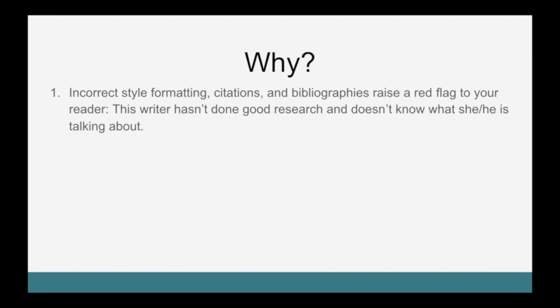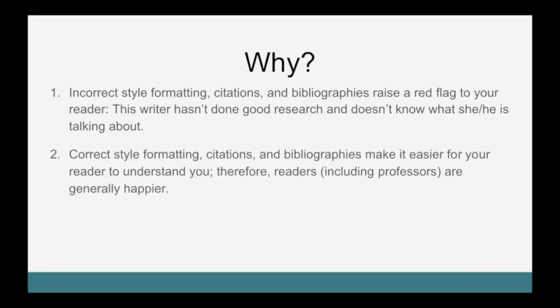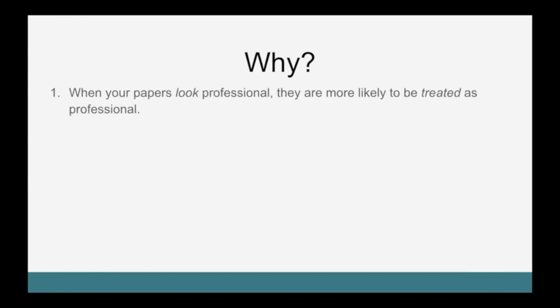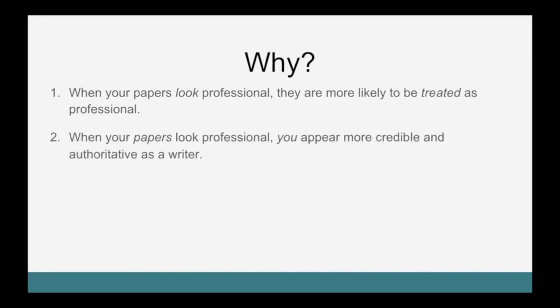So why does any of this matter? Because incorrect style formatting, citations, and bibliographies raise a red flag to your reader: this writer maybe has not done good research and does not know what she or he is talking about. On the other hand, correct style formatting, citations, and bibliographies make it easier for your reader to understand you. Therefore, readers, including professors, are generally happier reading your work. Additionally, learning the Chicago Manual style now means you do not have to learn it while writing, so you save time. It is much easier to learn how to do footnotes in the daylight than it is at 3 o'clock in the morning the day your paper is due. Further, when your papers look professional, they are more likely to be treated as professional, and you appear more credible and more authoritative as a writer.